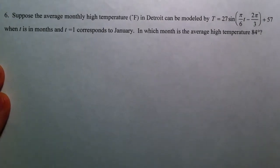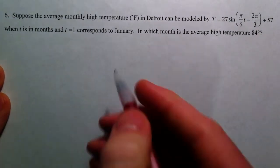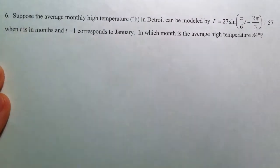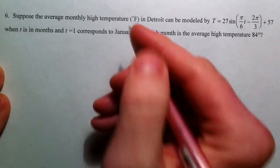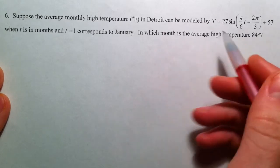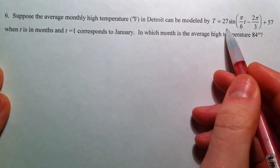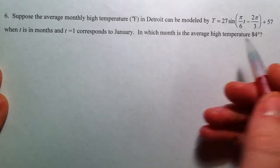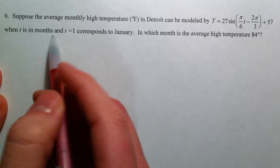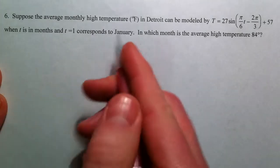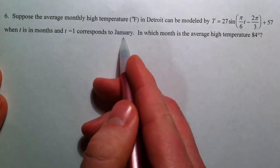All right, we're going to keep moving. This time we've got a story problem. Suppose the average monthly high temperature in degrees Fahrenheit in Detroit can be modeled by this function, where T stands for months, and if T equals 1, we get January.